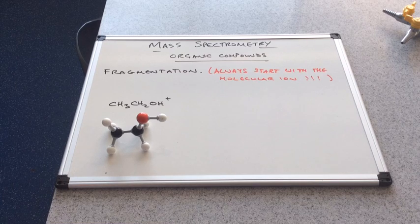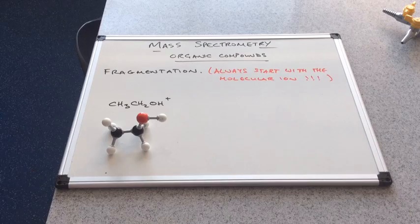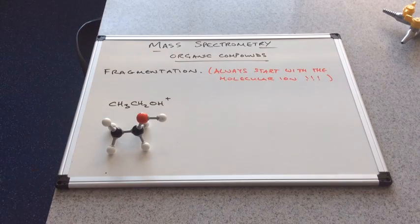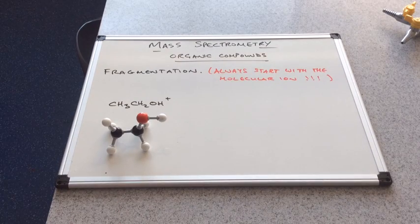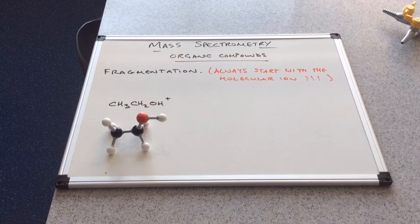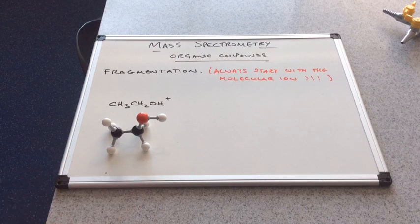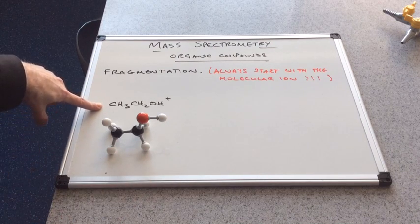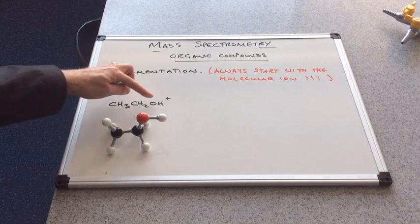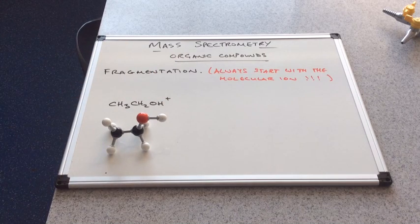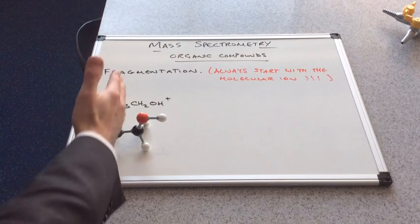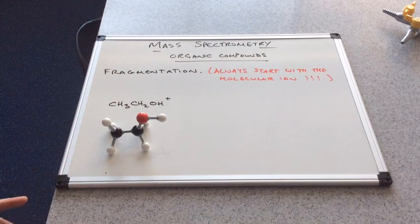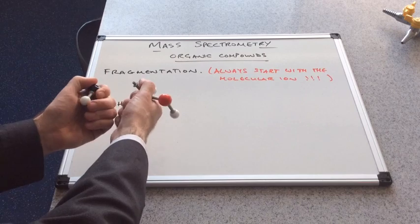We're going to look at fragmentation now, and how fragmentation occurs in the mass spectrometer. You can see I've written in red, I'll come back to this in a minute. Rule of thumb: when you do fragmentation, always start with the molecular ion. So that's the original molecule. We've turned it into the molecular ion, the positively charged ion of the original molecule. Remember, this has been bombarded with electrons. That's high energy. So what could happen?